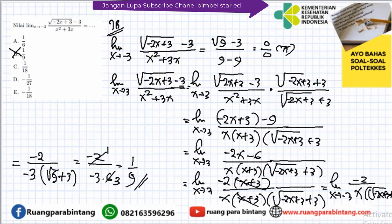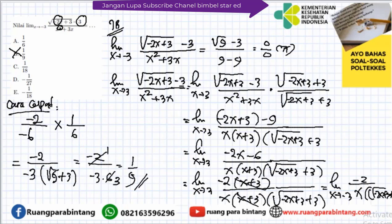Adik-adik, cara cepatnya begini: lihat angka di sini yaitu 3. Kalau angka di sini 3, maka kalikan dengan 1/(2×3) = 1/6. Kemudian koefisiennya -2, kalikan: 2 × (-3) = -6, tambah 3 menjadi 6. Jadi -2 / [(-3) × 6] = 1/9. Sama hasilnya. Adik-adik tinggal pilih cara yang paling gampang.